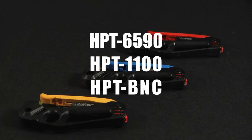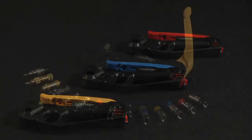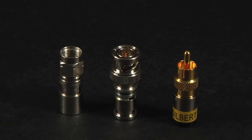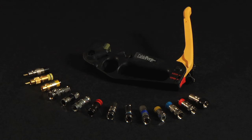HPT 6590, 1100, and BNC. HPT hybrid pocket tools attach all RCA, BNC, and F-type compression connectors used on RG6, 59, 11, and mini coax cables and are color-coded to facilitate easy tool selection.